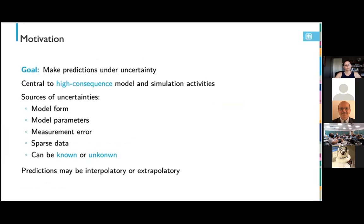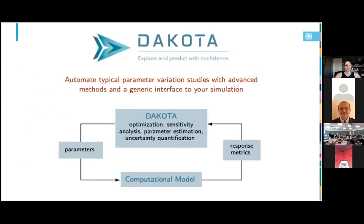More specifically, the goal we'll focus on today is making predictions under uncertainty. This is central to high consequence model and simulation activities, such as those that we encounter at Sandia. There are many sources of prediction uncertainty, including uncertainty in the model form, such as if there are multiple possible models, or if we need to use a lower fidelity model, or if we have incomplete physics knowledge. Uncertainty can also come from parameter estimation, measurement error, sparse data. And these uncertainties may either be known or unknown. The predictions that we're interested in making may either be interpolatory or extrapolatory. And extrapolation in particular is notoriously risky without quantified uncertainty.